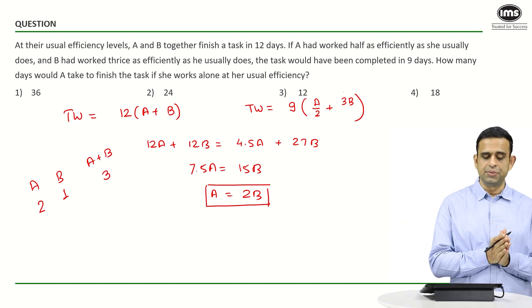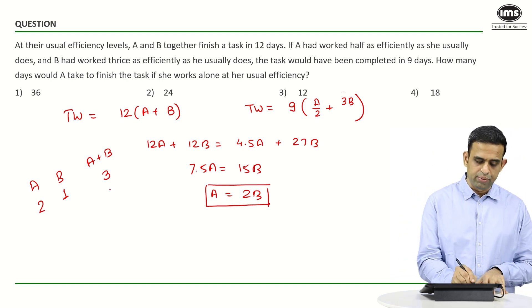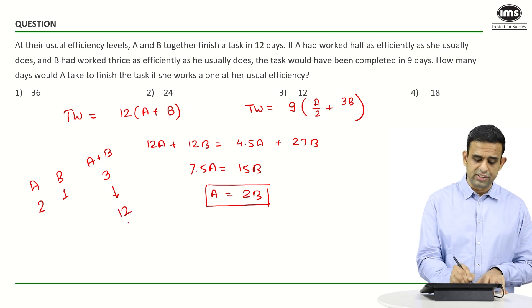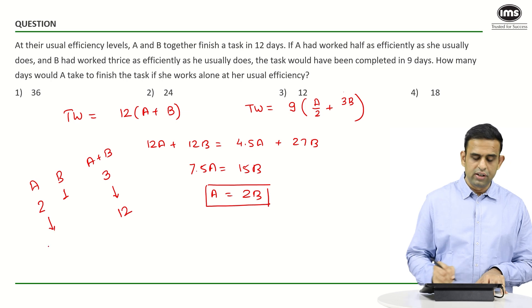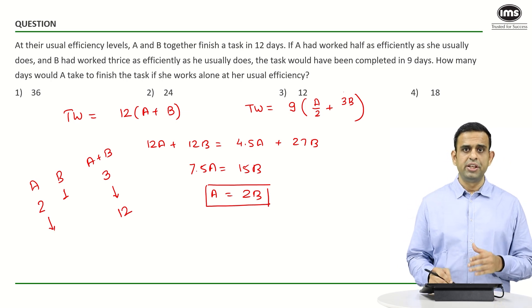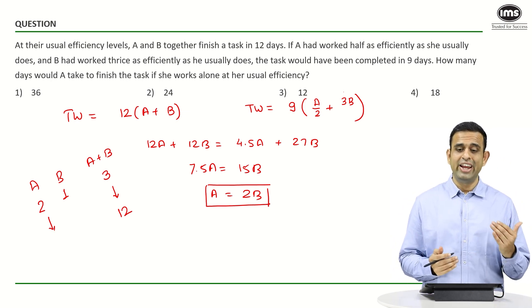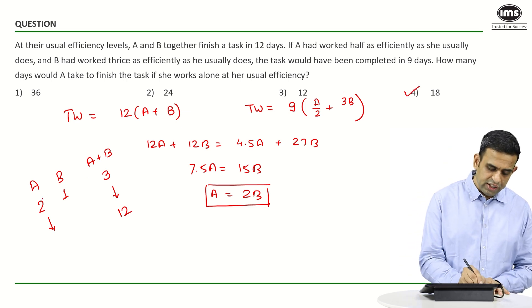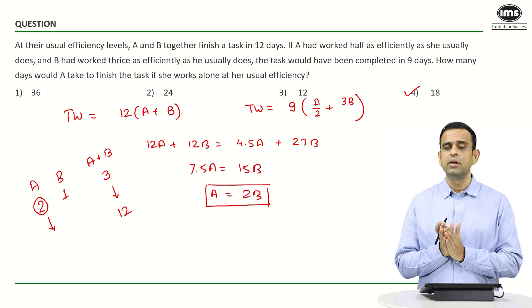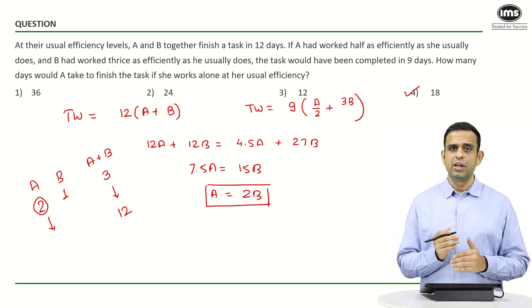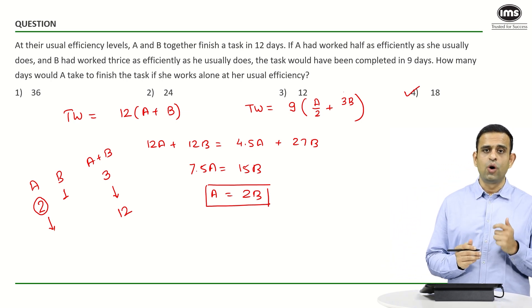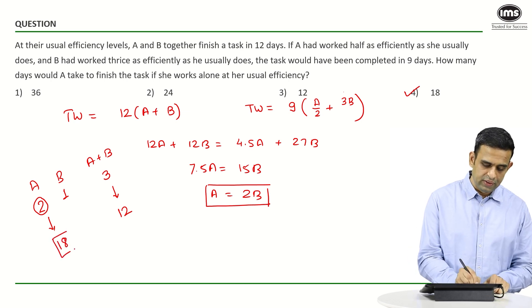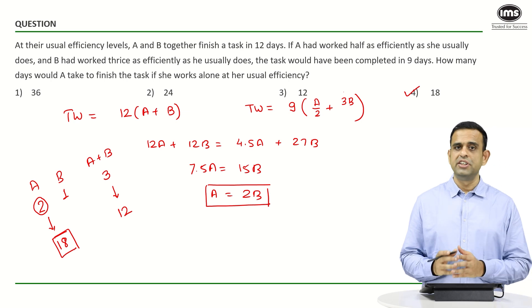The question asks how many days A will take to complete the same task at her normal efficiency. When both work together at normal efficiency, the work gets done in 12 days. So the answer is 3 × 12 ÷ 2, giving 18. Another way: since A's rate is 2/3 compared to what they do together, the time taken by A alone is 3/2 of 12, giving 18 as the answer.